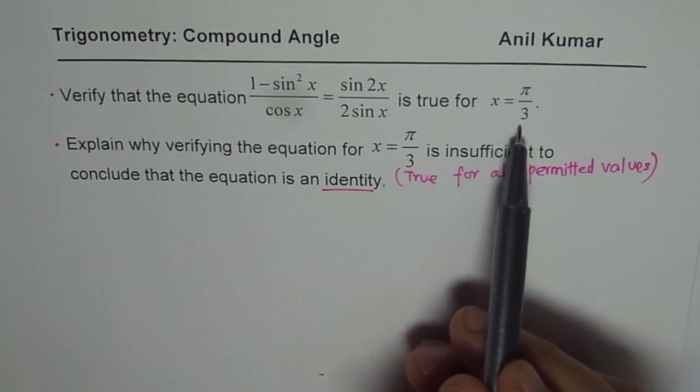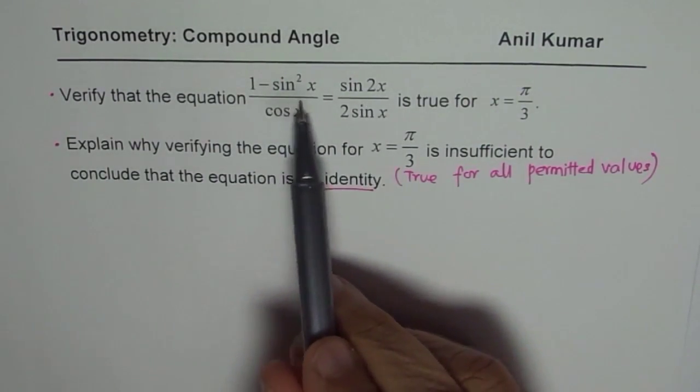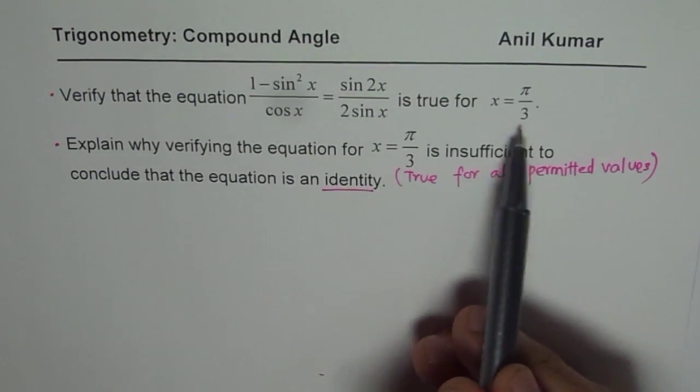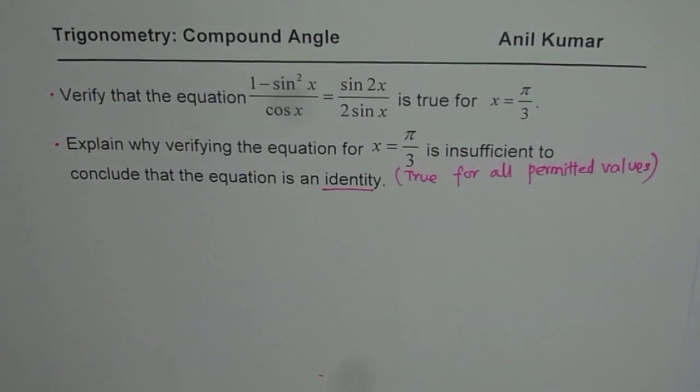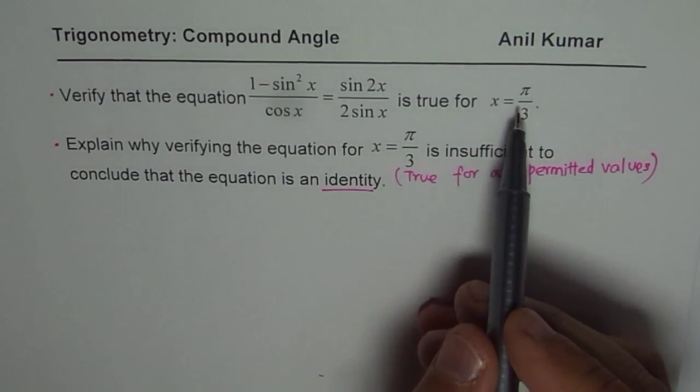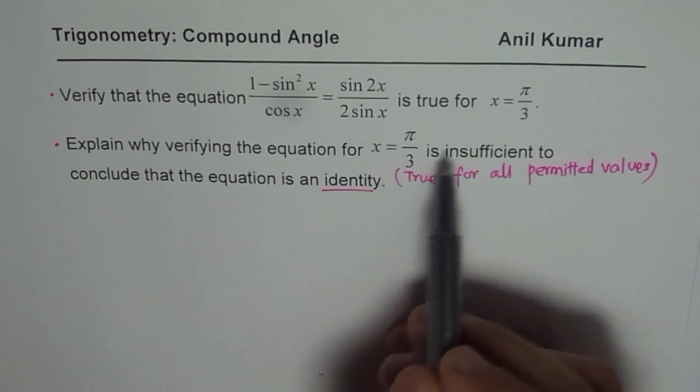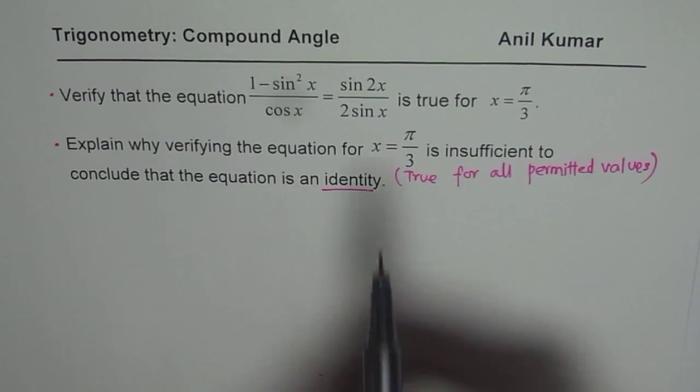So if we try π/3 here and we get both sides the same, it means definitely for π/3 this equation works. But we should check for many different values before we say that it is an identity. I hope you understand the difference.